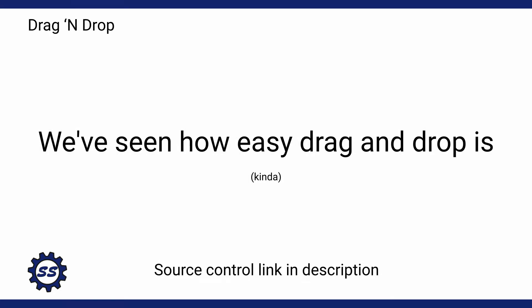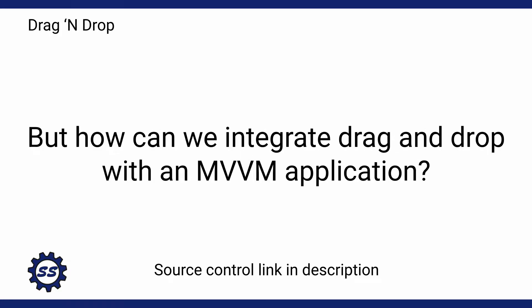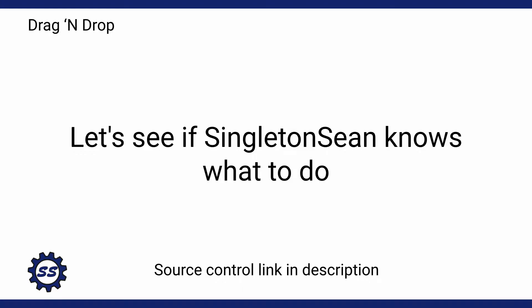Last time I introduced a bunch of different drag and drop concepts such as starting a drag and drop and handling different drag events. But let's say you want to do something whenever one of those drag events fires — and you might not want to do that in your view. You might want to do that in something like a view model if you're dealing with an MVVM application. That is exactly what we're going to be demonstrating in this demo.